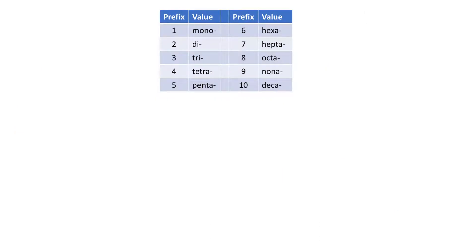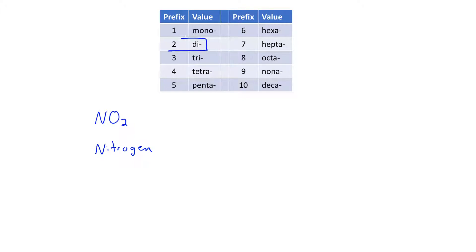The rules for naming binary covalent compounds are very simple. For the example NO2, we notice that nitrogen is written first, oxygen is written second, and there are two copies of oxygen in this compound. We bring down the nitrogen and write nitrogen, then get the prefix 'di' from the table, which indicates two. So it's going to be nitrogen dioxide.